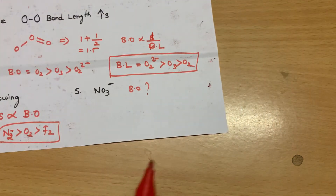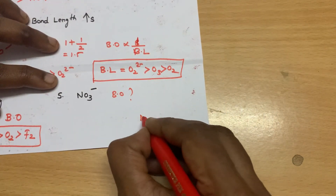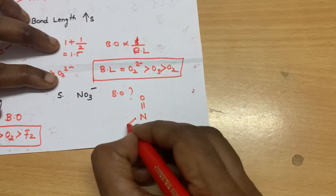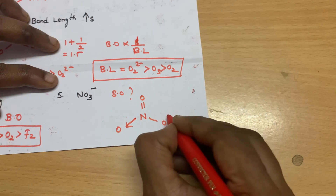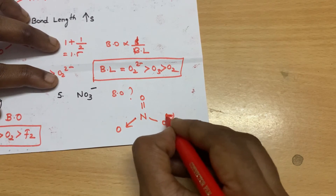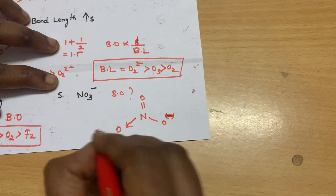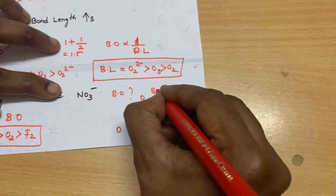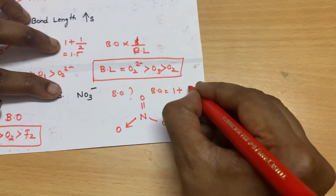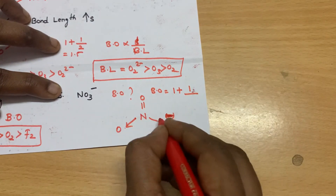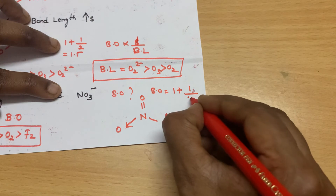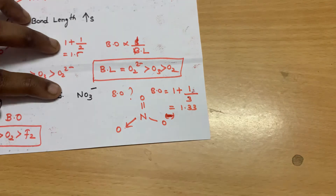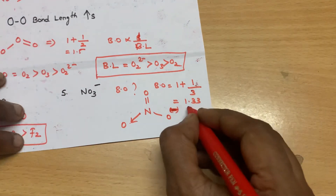For NO₃⁻, the structure has nitrogen with a coordinate bond and an O⁻. Applying the same trick: bond order equals 1 plus the number of pi bonds (1) divided by the number of sigma bonds (3). So 1 plus 1/3 equals 1.33. So the bond order for NO₃⁻ is 1.33.